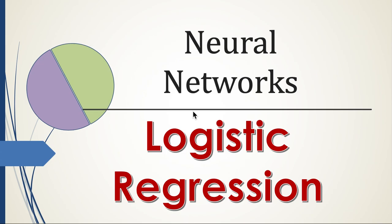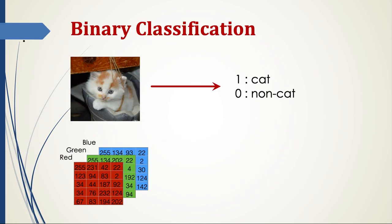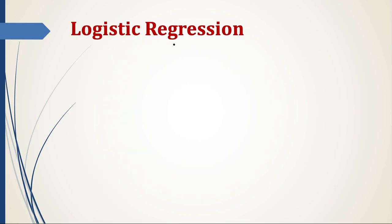In this video we will study about logistic regression. In our previous video we had seen that binary classification is a task of classifying a given input into two classes. We had seen an example where, given an image, you have to classify whether it's a cat image or a non-cat image, denoted by classes one and zero. Logistic regression is a way of doing binary classification.